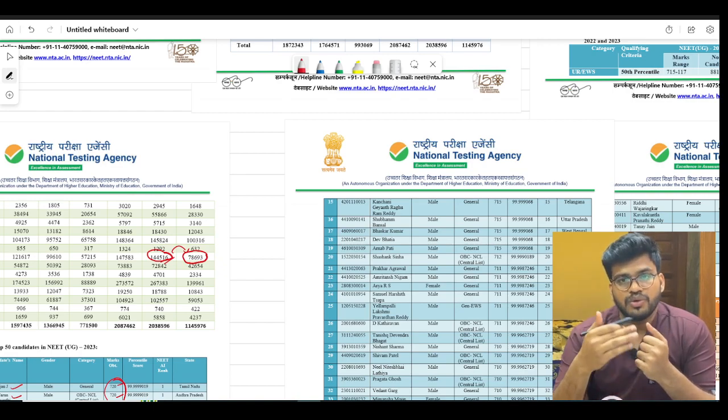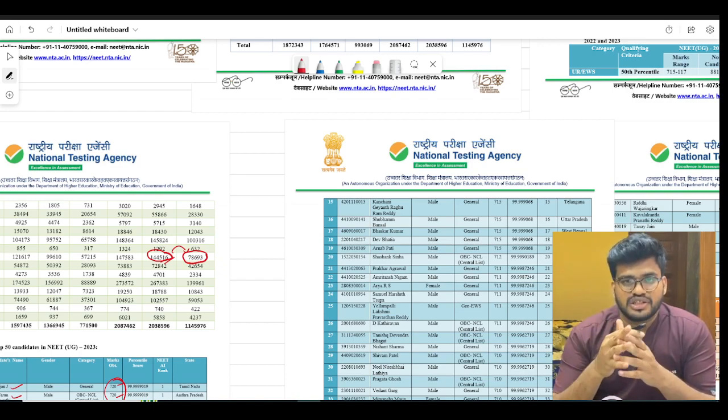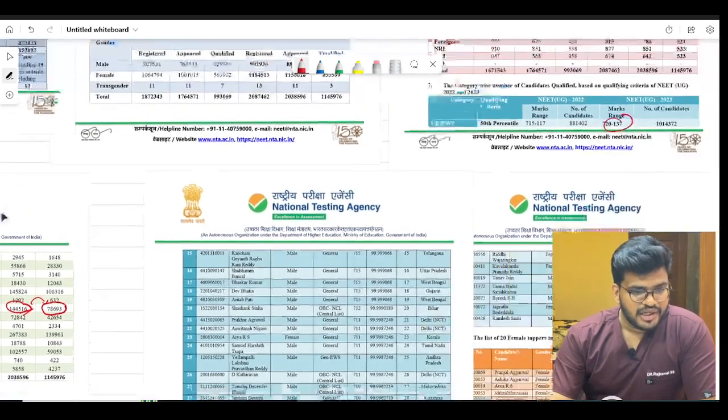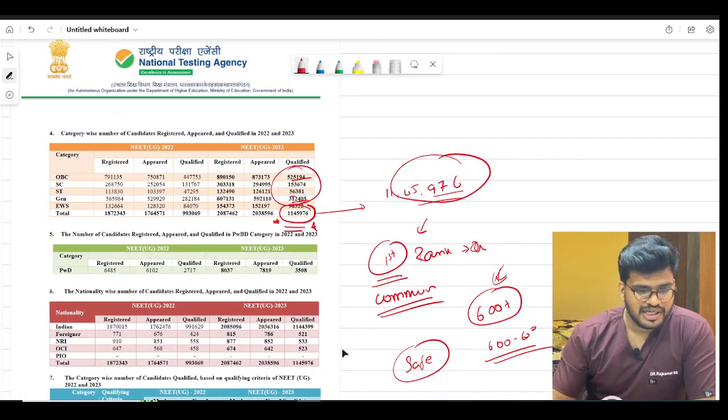However, the situation here is you need to understand how many seats are available in India. Does anybody know? The seats available are just 90,000 guys.